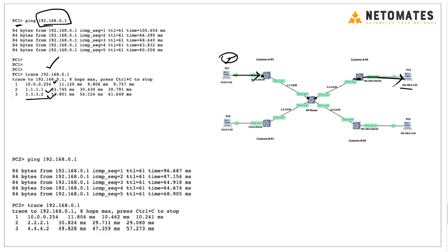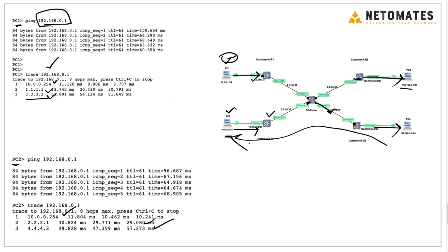The return packet follows the same path. Similarly, from PC2, we ping 192.168.0.1 — PC2 and its router are not aware of VRF. The packet travels to the gateway and then to 2.2.1 on the service provider router. Based on VRF B's routing table, the router sends it to 4.4.2, and the packet reaches its destination. The return path is also the same. This concept is similar to VLANs but applied to routing.